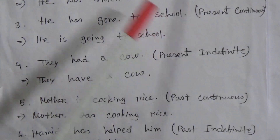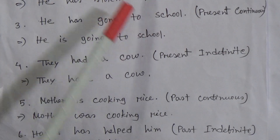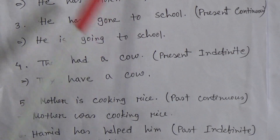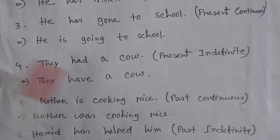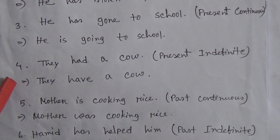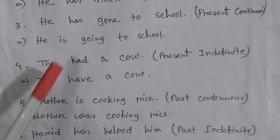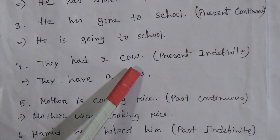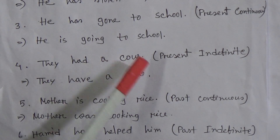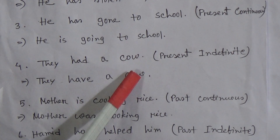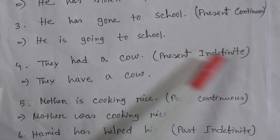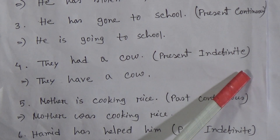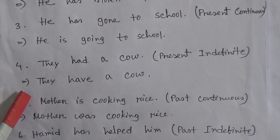At first you have to learn all the rules of tenses, then you will do these exercises easily. Number four: 'They had a cow.' You have to change this into present indefinite tense, so you write: 'They have a cow.'